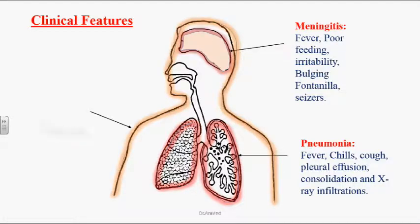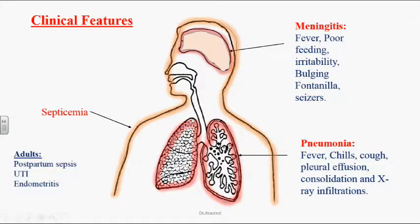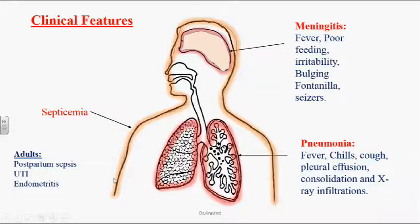These organisms can cause septicemia with fever, malaise, myalgia, and anorexia when they enter the bloodstream. In adults, postpartum sepsis can occur after delivery in females. Both males and females are susceptible to urinary tract infection. Endometritis also occurs when organisms enter uterine tissues, causing inflammation of the endometrium.